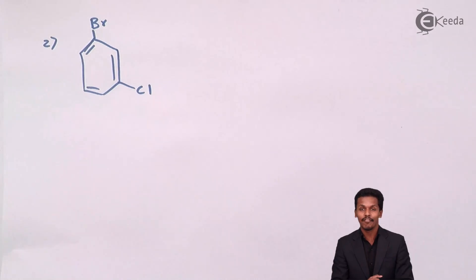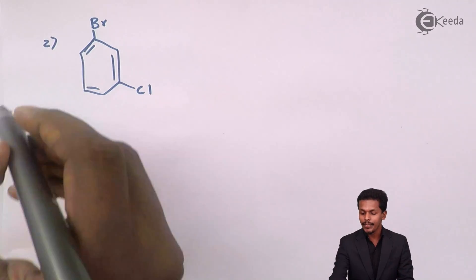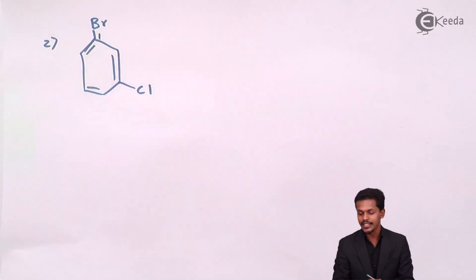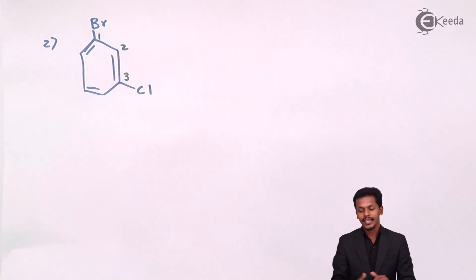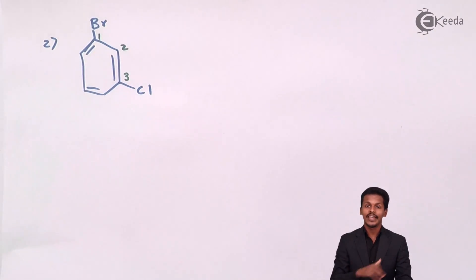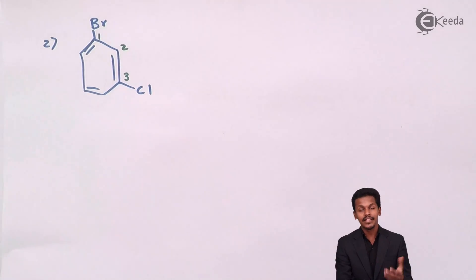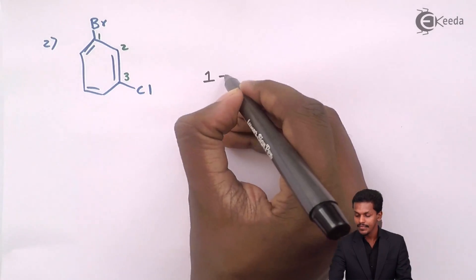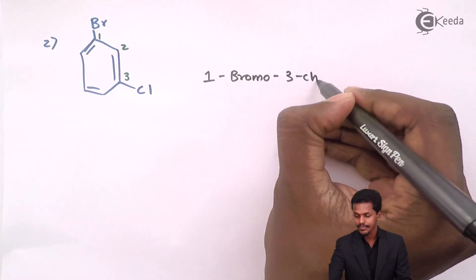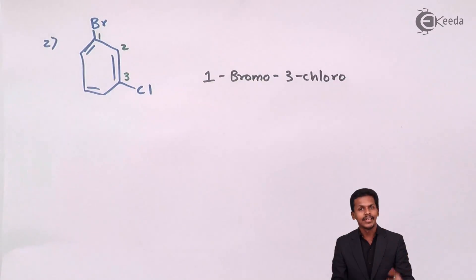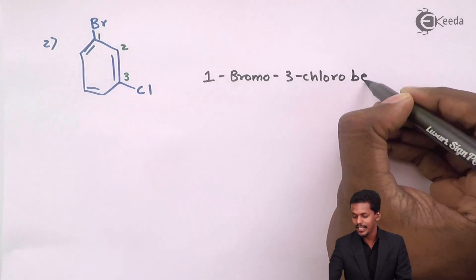Again we should follow alphabetical order according to IUPAC nomenclature. So we give the numbers as: this carbon gets carbon number 1, this is carbon number 2, and this is carbon number 3. Talking about the IUPAC nomenclature again in alphabetical order, the IUPAC name for this structure is 1-bromo-3-chlorobenzene, with benzene as the parent hydrocarbon.